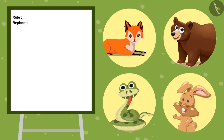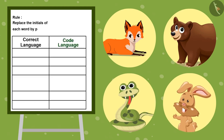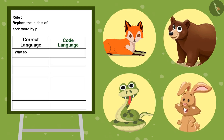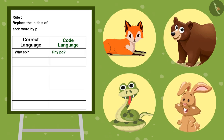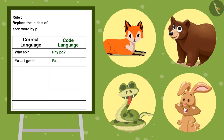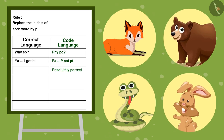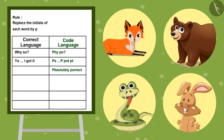And the rule of this language is to replace the initials of each word with P. Why so? Pipe po. Ya, I got it — pya, pipe pot pit. Absolutely correct.